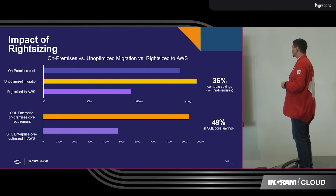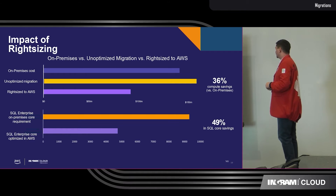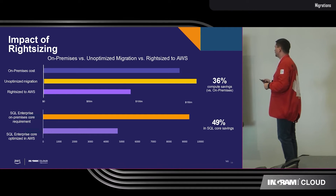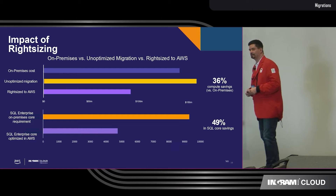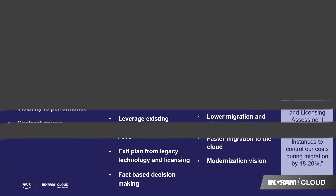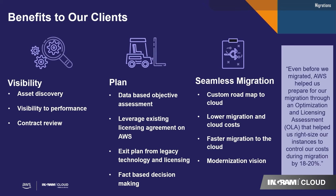So what are some of the savings on right-sizing? There's 36% compute savings versus on-premises. Look at that database licensing — almost 15% in SQL core savings. That's amazing. Benefits to clients include asset discovery, being able to plan, and leveraging existing license agreements on AWS. If you have software assurance and meet certain requirements, you can bring those licenses to AWS. And there's seamless migration, lower migration cost, faster migration, and cloud modernization.